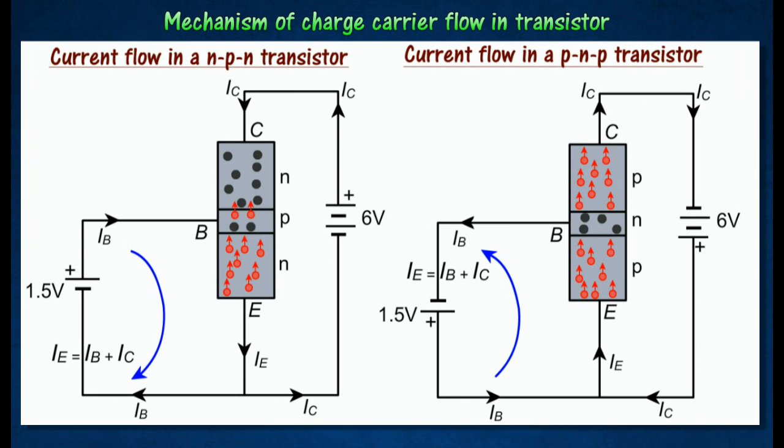The base layer is very thin and the potential difference across the collector is more positive. Therefore, most of the charge carriers, whether electrons or holes, are pulled across the base B to the collector C, producing a current IC.